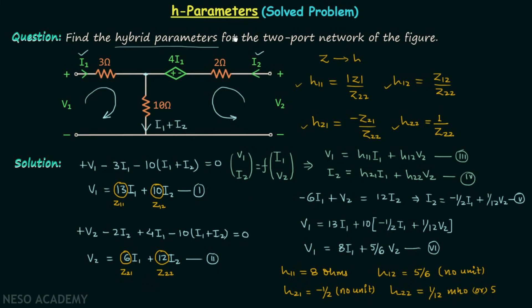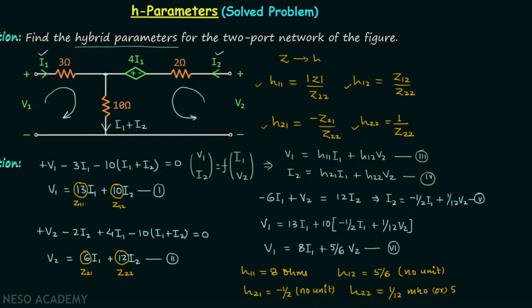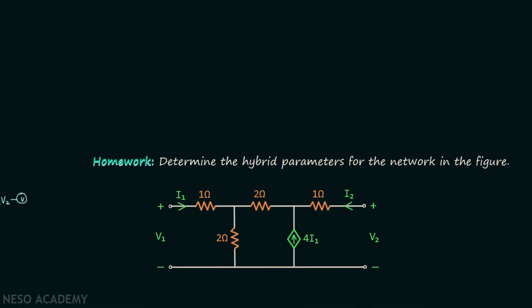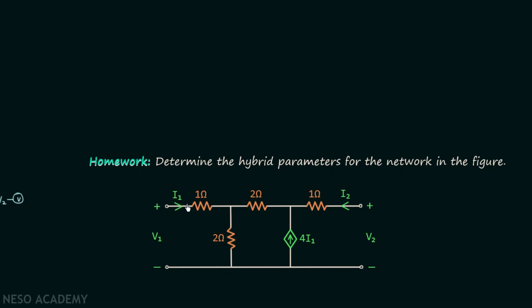That completes this problem. Practice this method to calculate H parameters, since you may not remember the conversion formulas in an exam. For the homework problem, find all four hybrid parameters of the given two-port network and post your answer in the comment section.